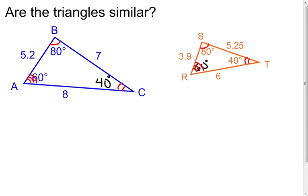So my angles, my corresponding angles are congruent. There's my first check. Now I've got to look at the sides to match these up. I'm going to look at my 5.2 unit side.